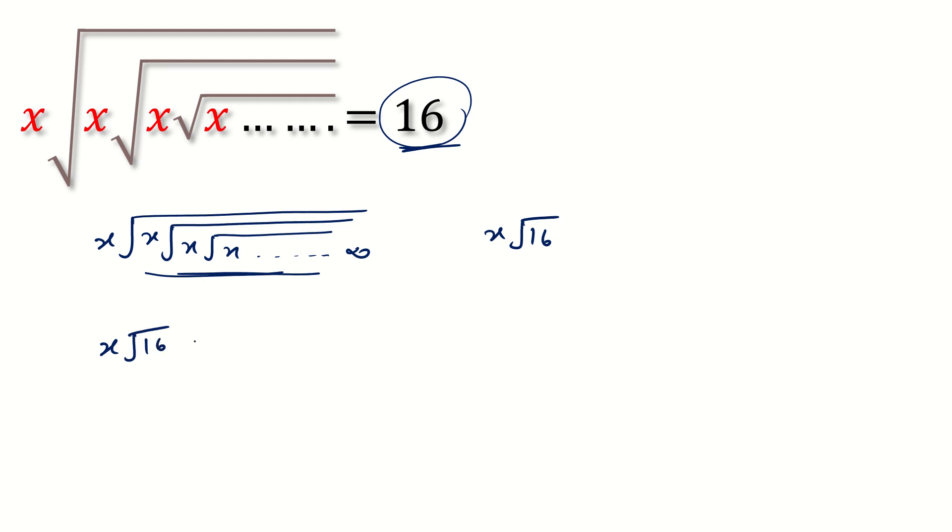So x square root 16 is equal to 16. Now, plus or minus 4x is equal to 16, and x is plus or minus 4. Because minus 4 times 4 is not equal to 16, we neglect minus 4, and our answer is x equals 4.